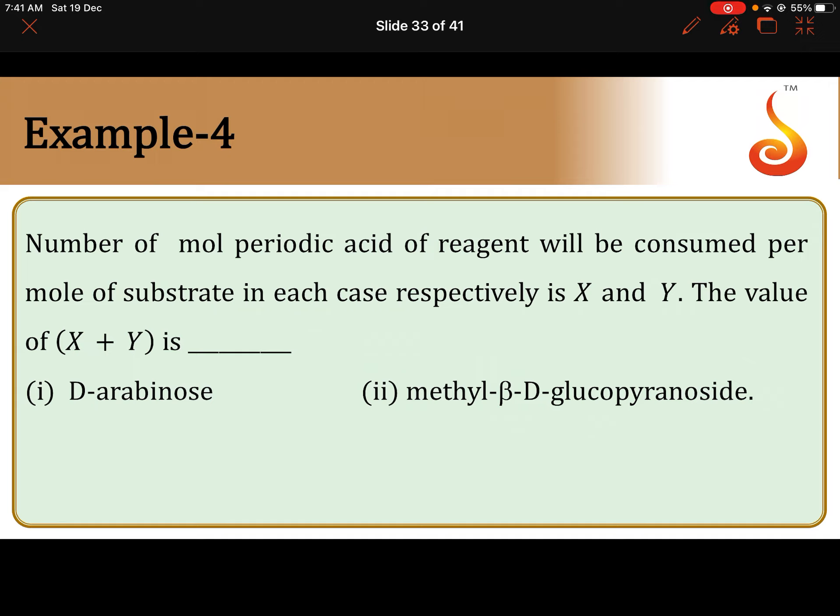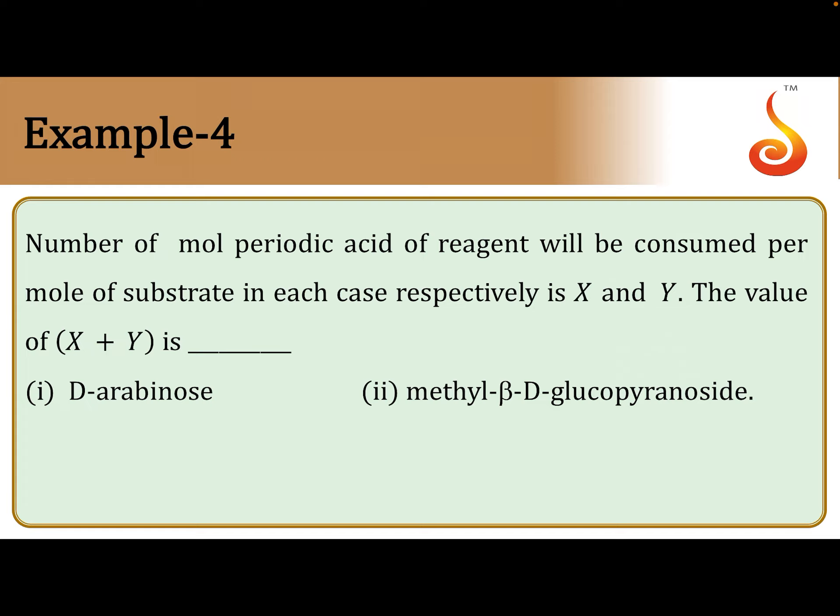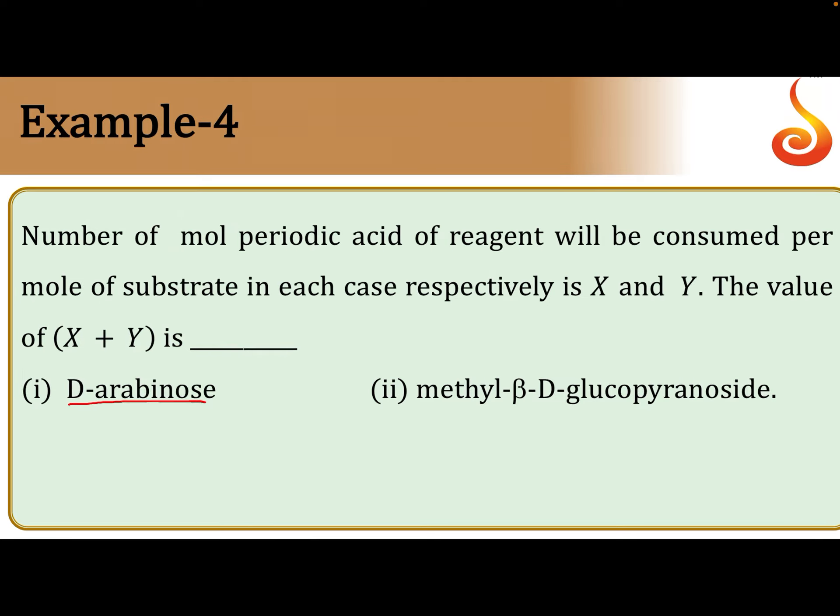Number of moles of periodic acid required for each one mole of D-arabinose and methyl-β-D-glucopyranoside. Number of moles of HIO4 is equal to the number of C-C bonds to be broken.